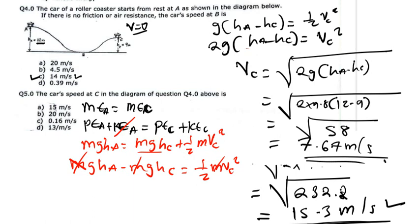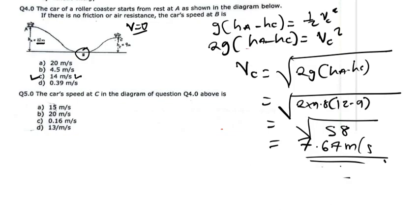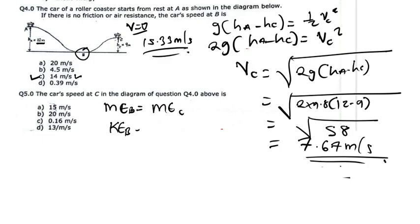Looking at the answer choices, there is no answer close to 7.6, so there was an error in the question. You can verify the same answer using mechanical energy at B equal to mechanical energy at C — it will still be 7.67. Remember, at point B we found the speed to be 15.33 meters per second, and at point C there is both kinetic energy and potential energy.